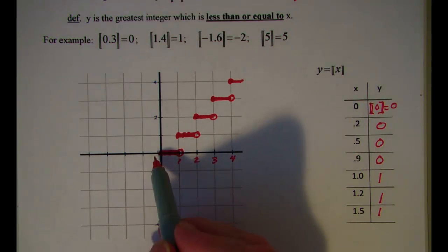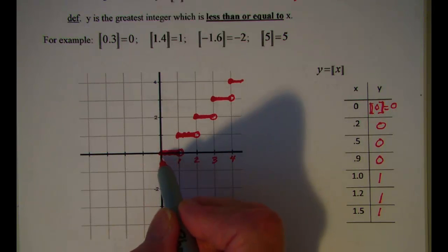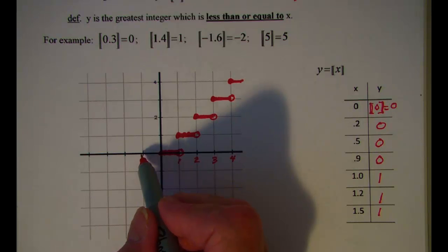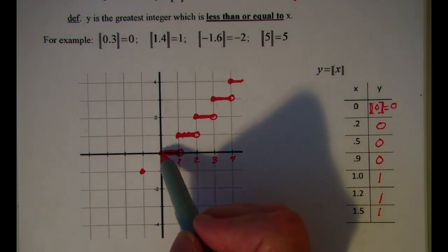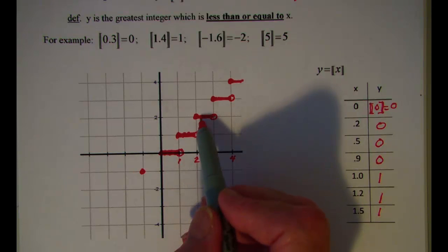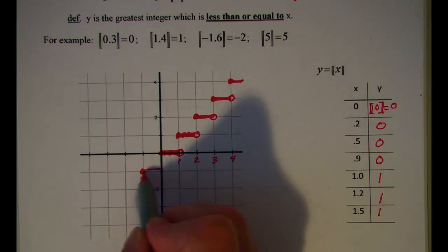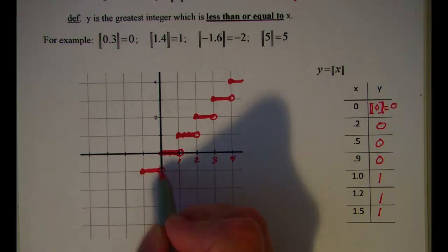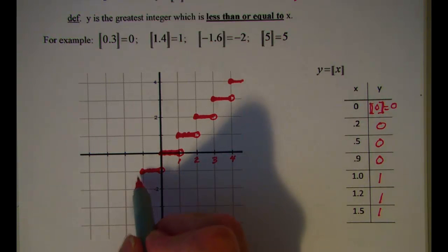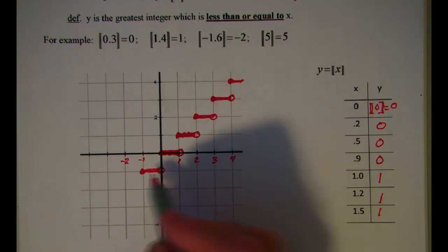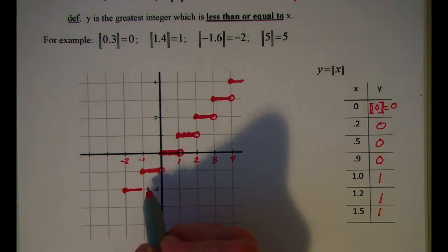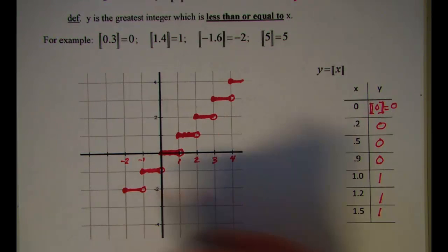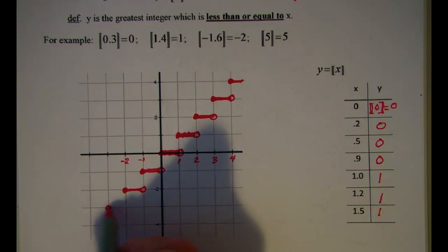Now we can look at it going to the left as well. When x is negative 1, my y value is negative 1. The left endpoint is solid and the right endpoint is an open circle, to show that I'm graphing up to but not including the next step. So for x equal negative 2, my y value is negative 2, and all values in between will have a y value of negative 2, with an open circle on the right side.